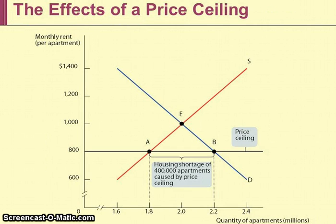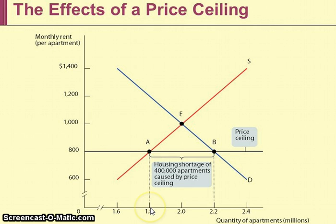A price ceiling is a price maximum. When imposed, it will cause an immediate shortage of 400,000 apartments according to this graph. We calculate that shortage by taking the quantity demanded at the price ceiling — 2.2 million — and subtracting the quantity supplied at the ceiling price — 1.8 million — leaving a shortage of 400,000 apartments.